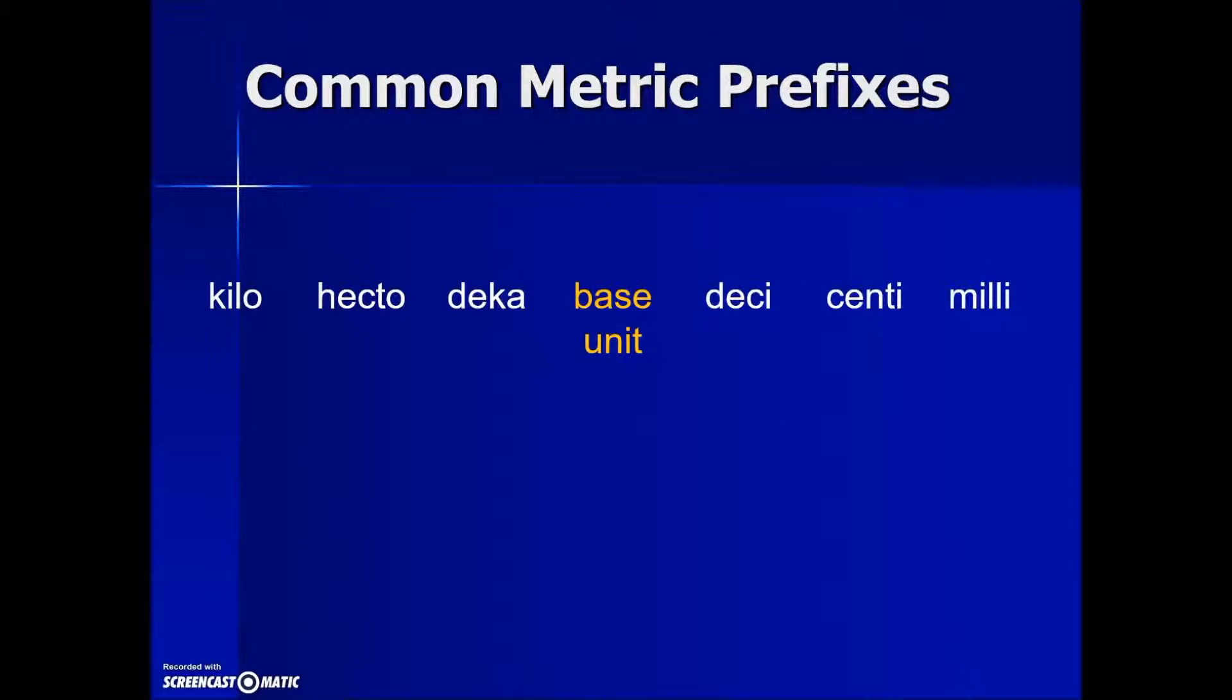So back to our common prefixes. As we go to the left, the prefixes are getting larger, the deca, hecto, kilo that we saw earlier, but if we need to go smaller, we'll go to the right. As you move to the right, they become smaller. Each one is one tenth smaller than the previous one.